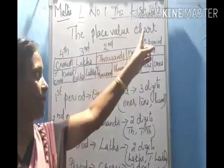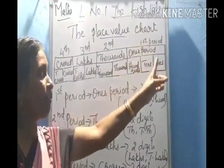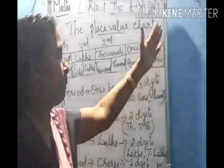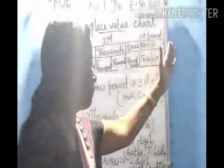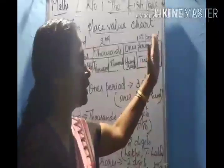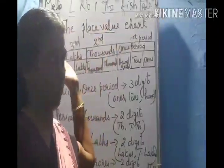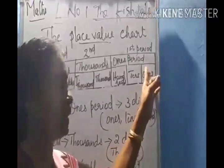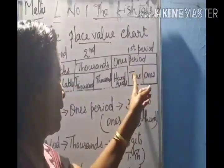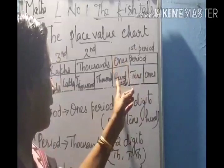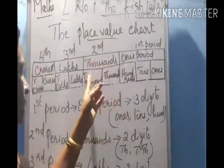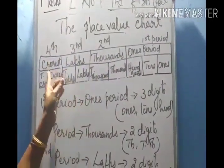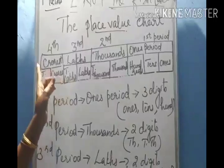The place value chart begins with the ones place at the extreme right. Remember, it starts from the right to the left. To the extreme right is ones place, then moving to the left: tens, hundreds, thousands, ten thousands, lakhs, ten lakhs, crores, and ten crores.